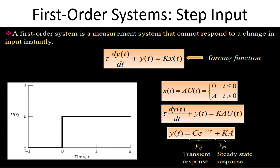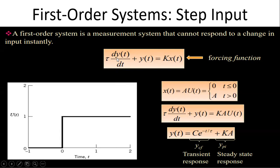For first order systems, the measurement system cannot respond to a change in input instantaneously because there is a time lag due to RC — resistance and capacitance. The typical equation is: τ · dy/dt + y(t) = k · x. Using the D operator, this becomes (1 + τD) · y(t) = k · x, so y(t)/x(t) = k/(1 + τD). This is the governing equation for first order systems.